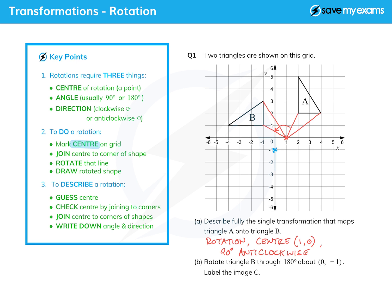Now I'm going to join the center to the corner of the shape. It doesn't matter which corner, so I'm just going to join it to that nearest corner. And then I'm going to essentially rotate that line I've just drawn through 180 degrees. Now there is no direction because it doesn't matter.